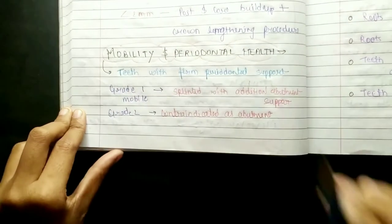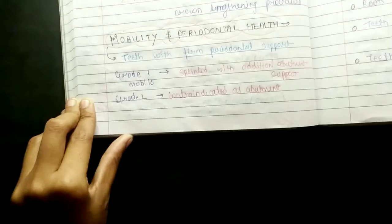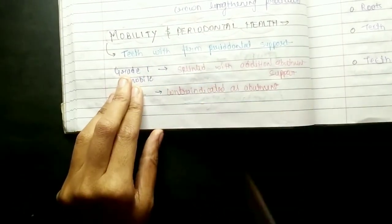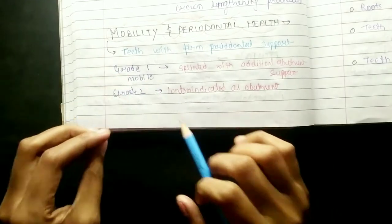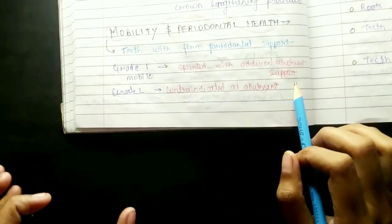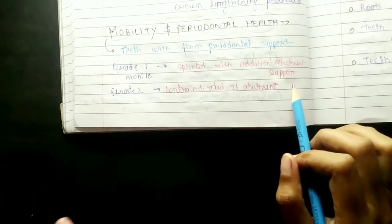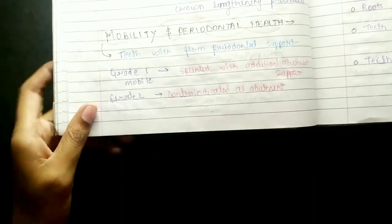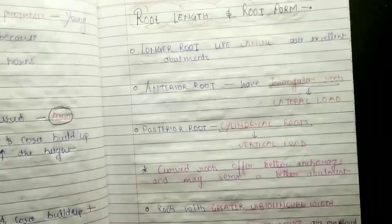Coming to mobility: teeth with firm periodontal support are ideal. Grade 1 mobility - splint with additional abutment support is needed; we can still take such a tooth as an abutment. Grade 2 mobility - we cannot use that tooth as an abutment.